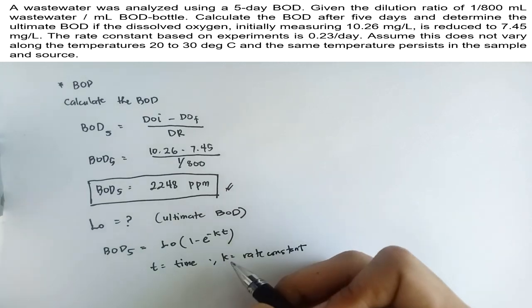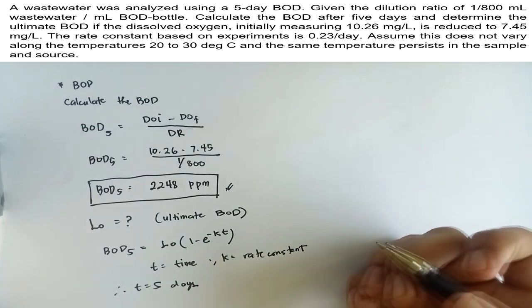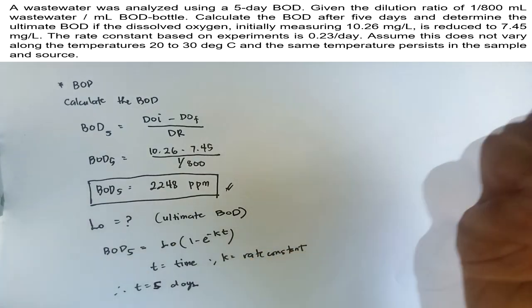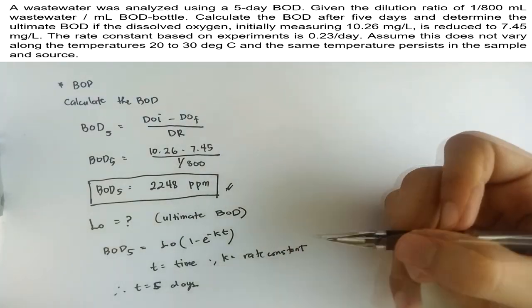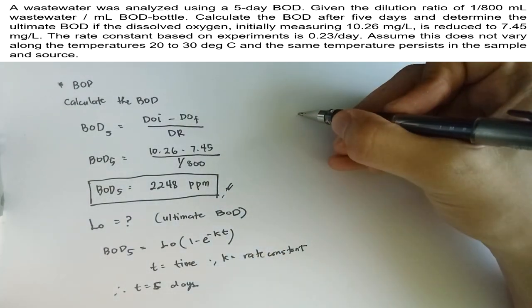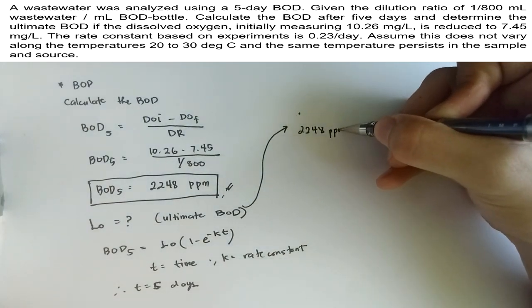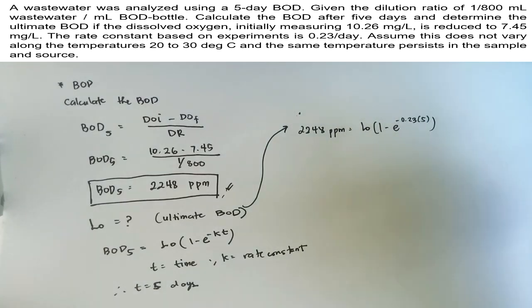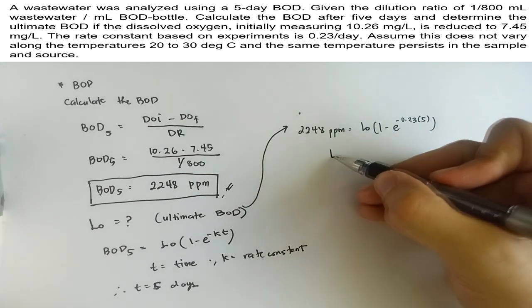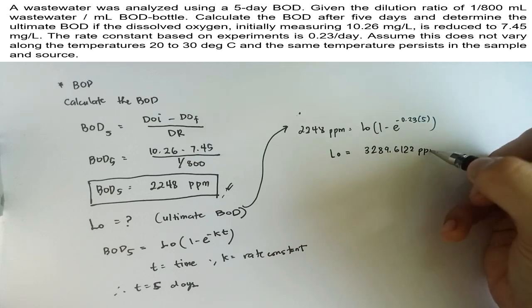In this case, it's 5 for the value of our T. Now, if you try to experiment and conduct a 6-day BOD or a different one, we just have to use this time, let's say, 6 days, instead of 5. BOD-5 is equal to 2,248 ppm and that is equal to the ultimate BOD multiplied with 1 minus e raised to negative 0.23 times 5 days. Just doing some algebra, we get 3,289.6122 ppm.